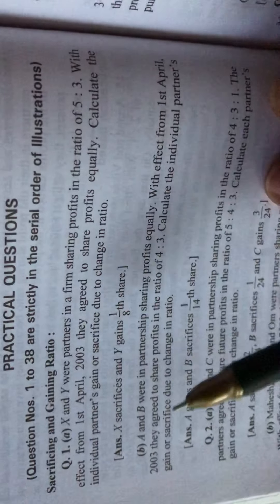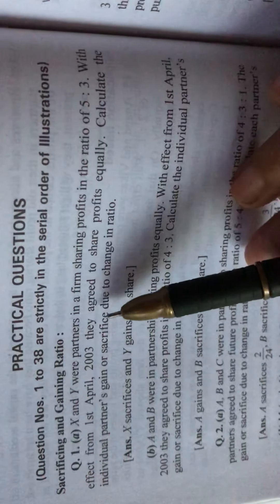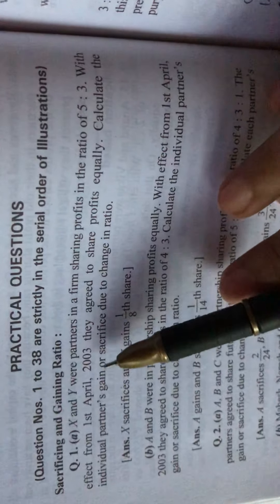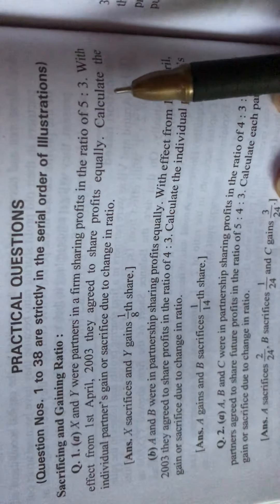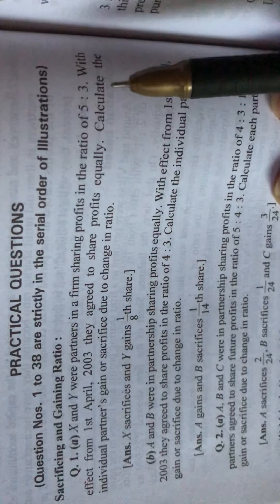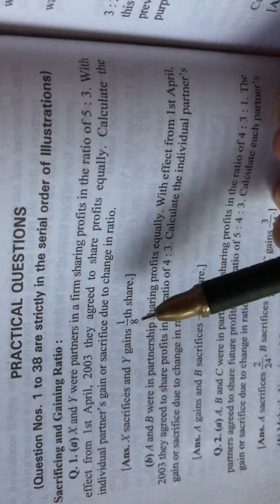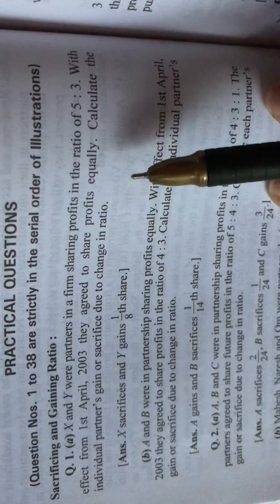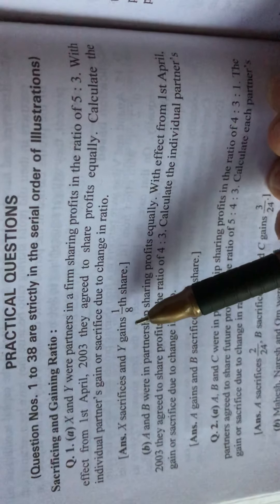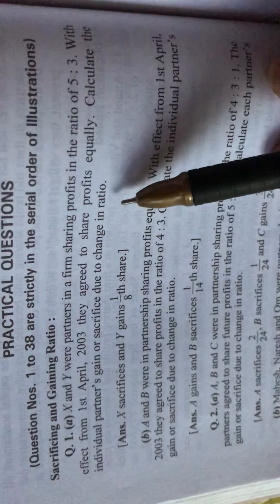Here the first sum is related to sacrificing and gaining ratio. X and Y were partners in a firm sharing profits in the ratio of 5 to 3. With effect from 1st April 2003, they agreed to share profits equally. Calculate the individual partner's gain or sacrifice due to change in ratio.